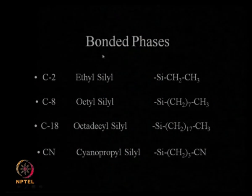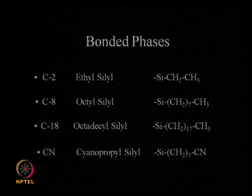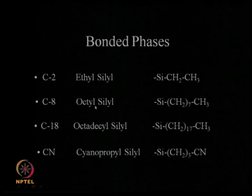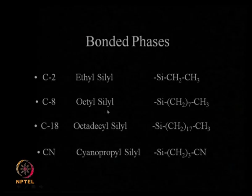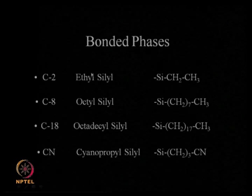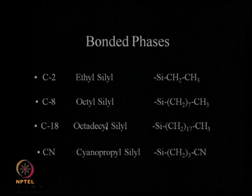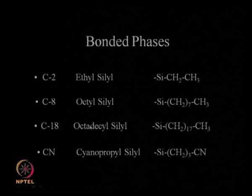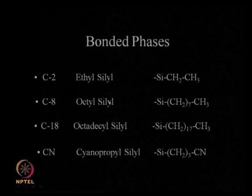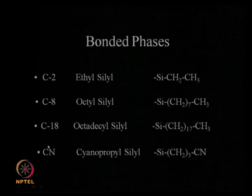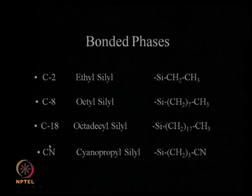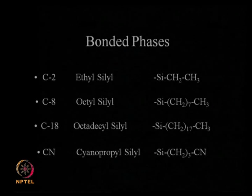The bonded phases used in reverse phase chromatography include ethyl silyl, octyl silyl, or octadecyl silyl (C18), and cyanopropyl silyl. As you go down the series from ethyl to octyl to octadecyl, the stationary phase becomes more and more hydrophobic. The C18 type of column has become extremely popular and ubiquitous, used in many applications including separation of phytochemicals and organic metabolites.